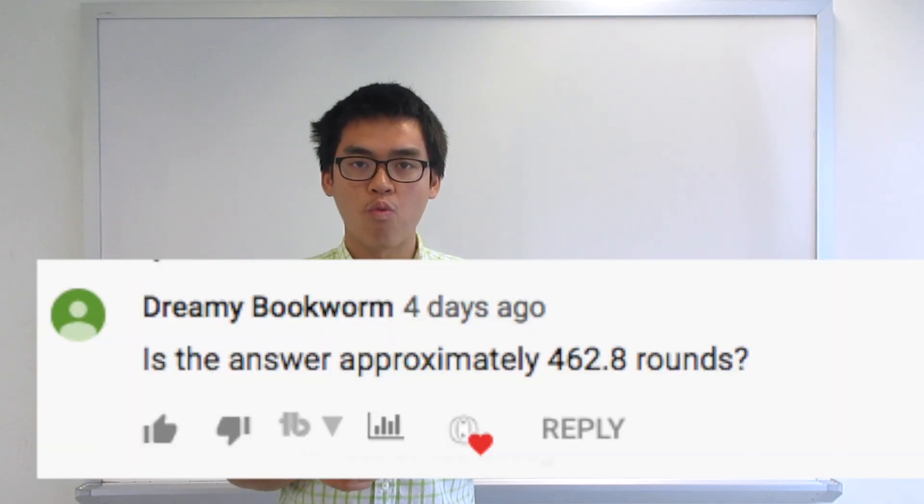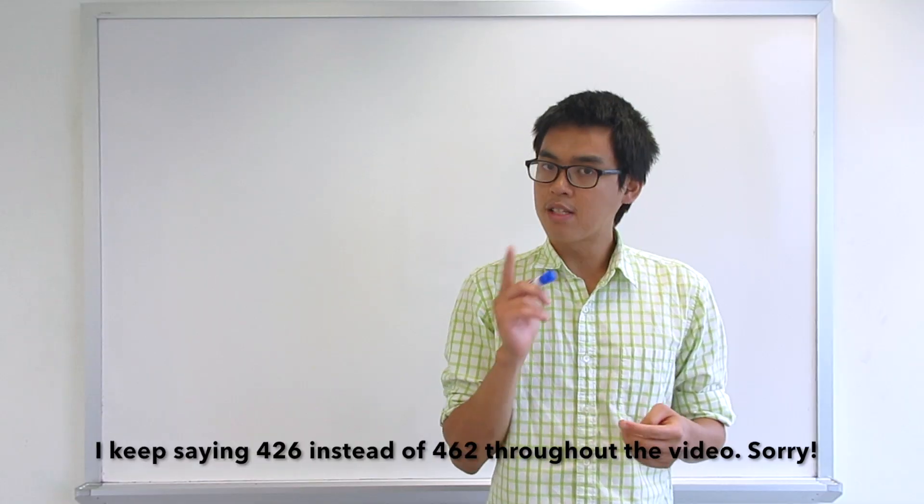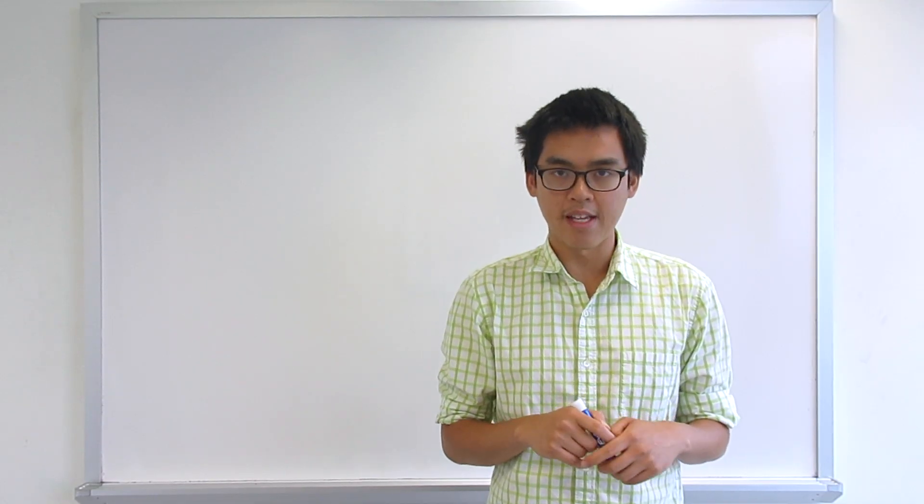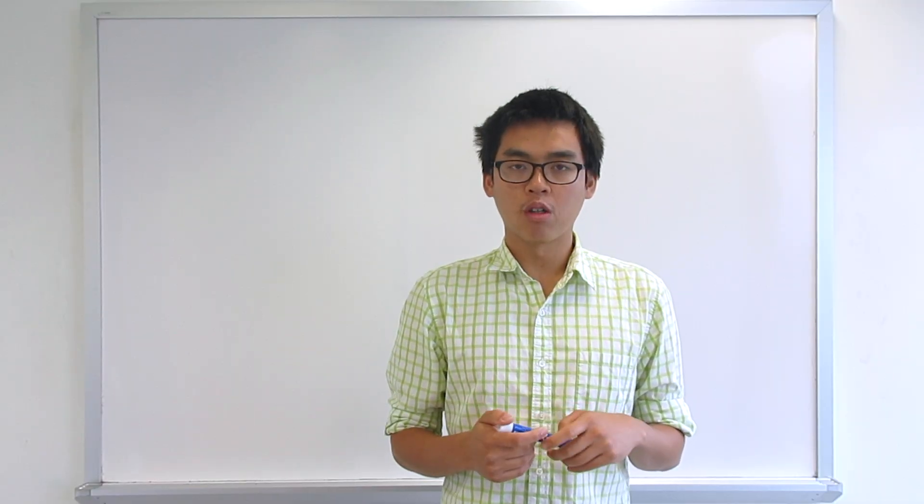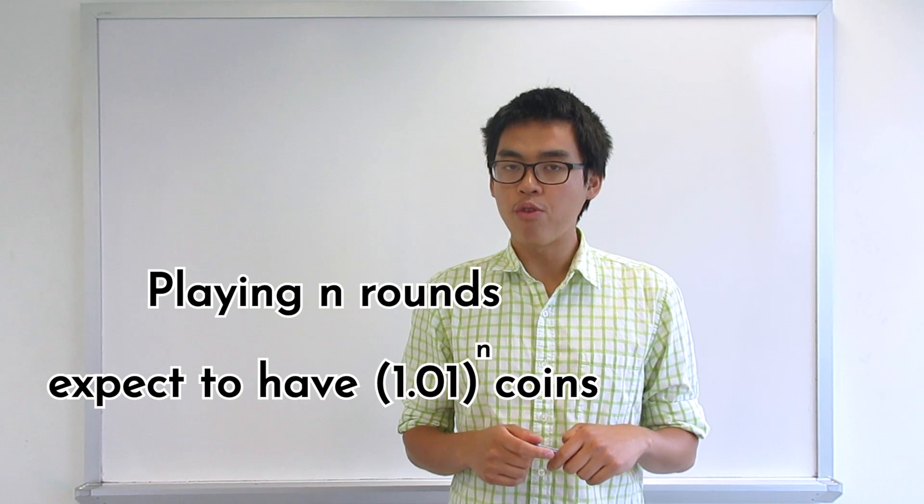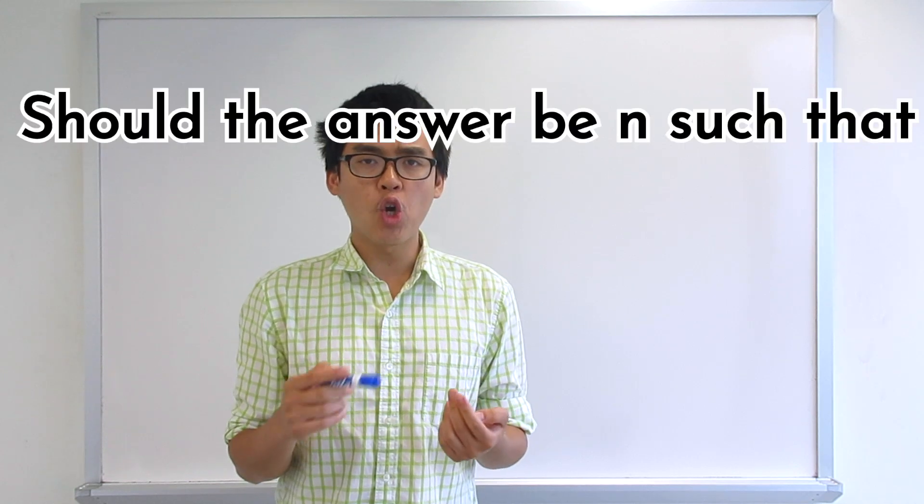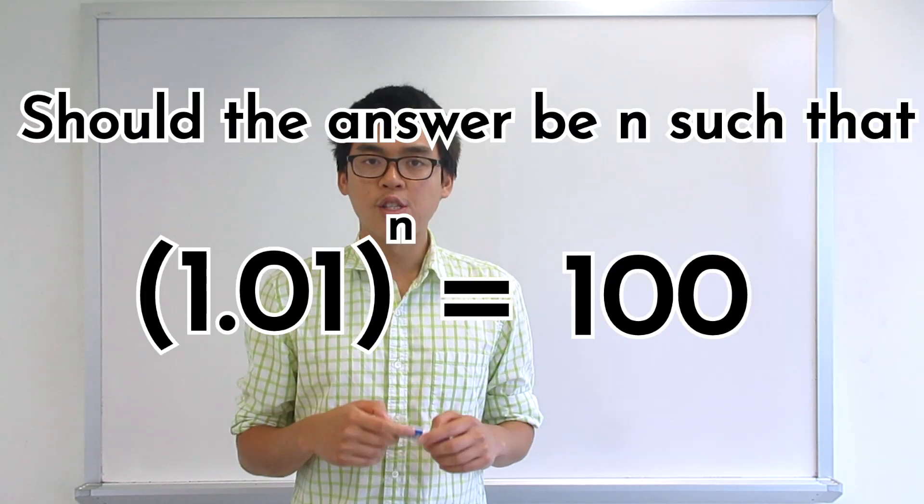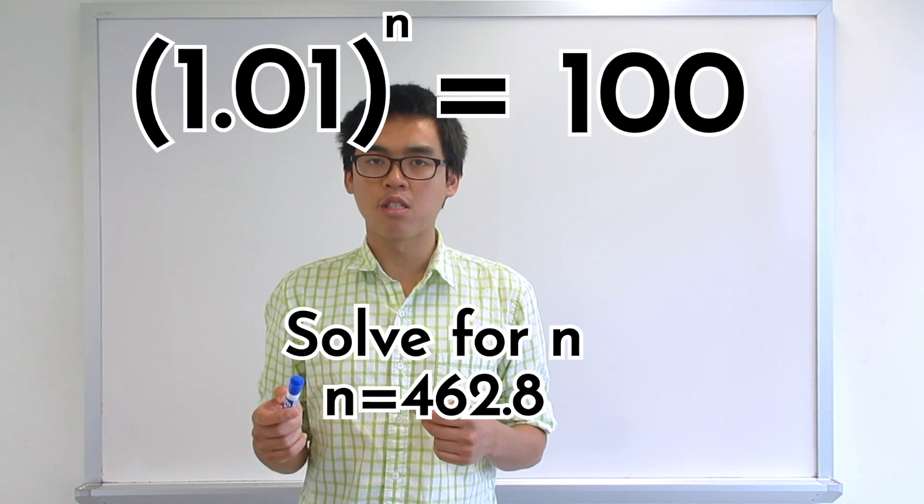One of the viewers asked me whether or not the answer is 426.8. That's actually a good guess and let me tell you why. Spoiler alert! In the previous video, we concluded that the expected number of coins after playing n rounds is 1.01 to the n. So one might ask, can we just set up 1.01 to the n equal to 100? And solving the equation gives us n is approximately 426.8.